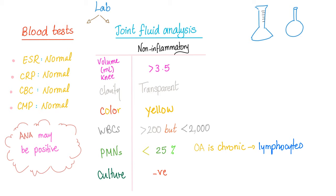For labs, we have blood tests and joint fluid analysis. Blood tests: ESR is normal because osteoarthritis is non-inflammatory. CRP is normal for the same reason. CBC and CMP are also normal. ANA may be positive, but it's a low-specificity test. For more detail on ANA, refer to the rheumatology labs video in this playlist.